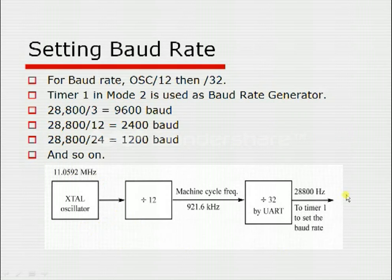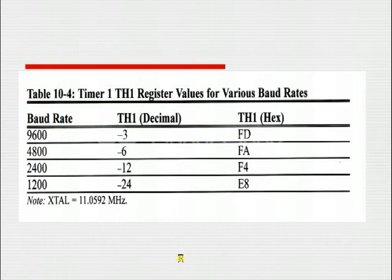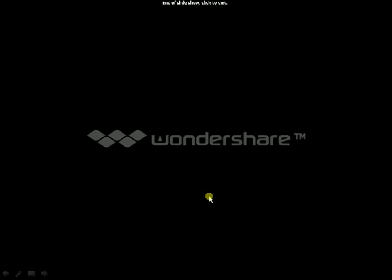The internal hardware shows the crystal frequency passing through a divide-by-12 circuit, giving 921.6 kHz to the UART. Inside UART, a divide-by-32 circuit produces 28800 Hz, which is the clock input to Timer 1 — that is why only Timer 1, not Timer 0, can set the baud rate. Pre-calculated TH1 values in hexadecimal for common baud rates (9600, 4800, 2400, 1200) are available. With SMOD = 0 and known oscillator frequency, we solve for TH1 and load that value into the TH1 register.